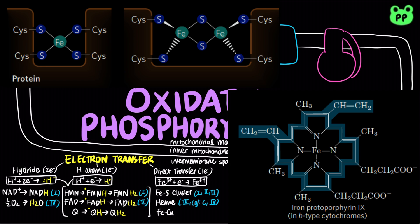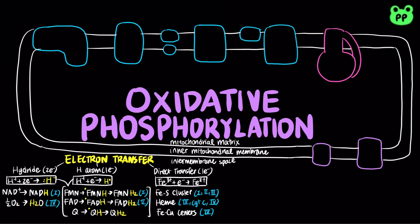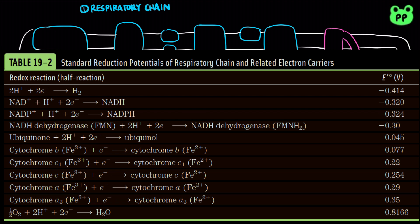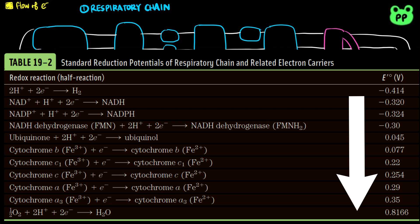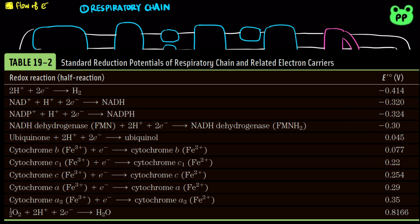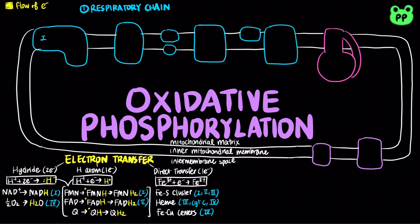Iron-sulfur centers, the heme cofactor, and iron-copper centers are all involved. The respiratory chain is located on the inner mitochondrial membrane and involves four main multiprotein complexes. Electrons are passed from carriers with lower reductive potential to carriers with higher reductive potential, which correlates to electron affinity, releasing a large amount of energy used to pump protons from the mitochondrial matrix to the intermembrane space.